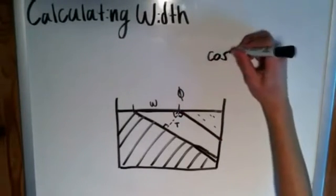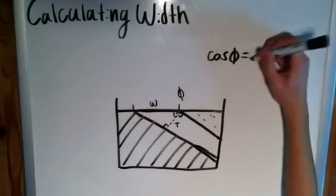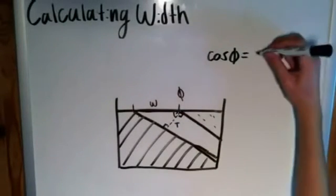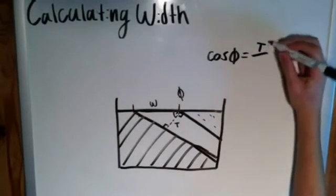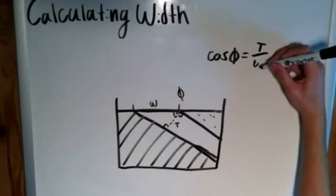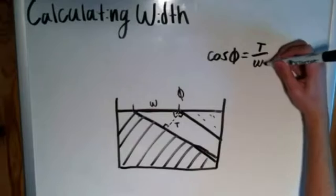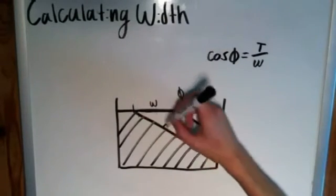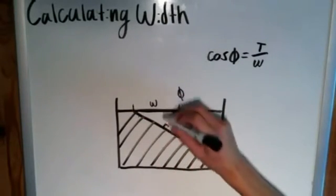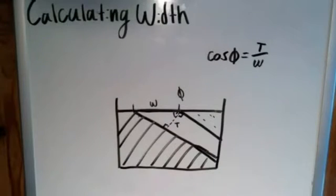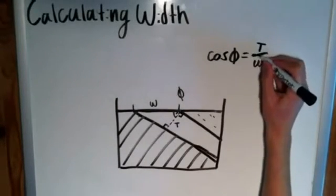So phi is right here, and the cosine of phi we know is equal to the adjacent side, that's T. Divided by the hypotenuse, that's... excuse me, divided by the width, that's W, which is the hypotenuse because it is across from the 90 degree angle in this case. And that allows us to find the width.